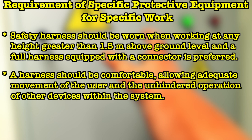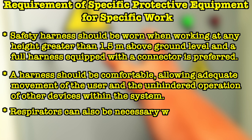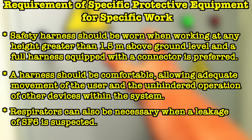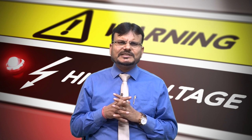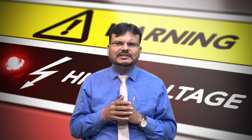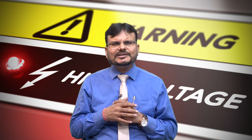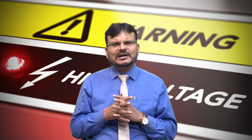Harnesses should be comfortable, allowing adequate movement and unhindered operation of other devices. Depending on working conditions, a seat harness may be necessary — it has lateral and central attachment points and is designed primarily for work in suspension. Respirators can also be necessary when leakage of SF6 (sulfur hexafluoride) is suspected. Although SF6 is not toxic, it degrades under the heat of arcing to hazardous gases. When performing energized work or switching operations, insulated gloves and dielectric shoes are required, and gloves must be tested and suitable for the working voltage.